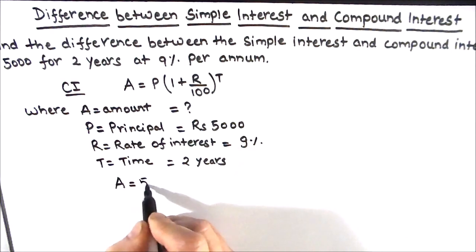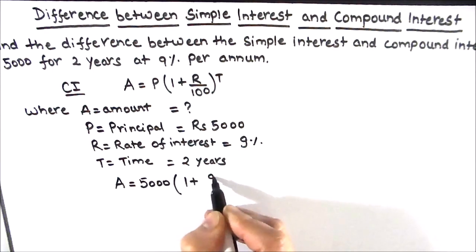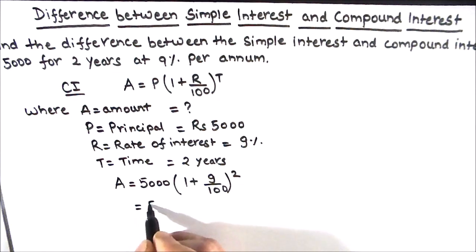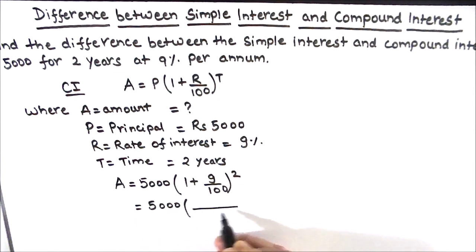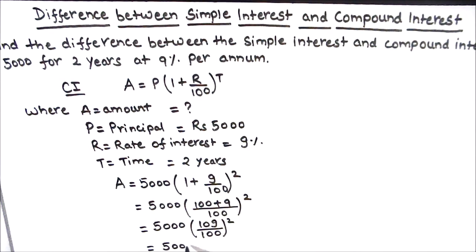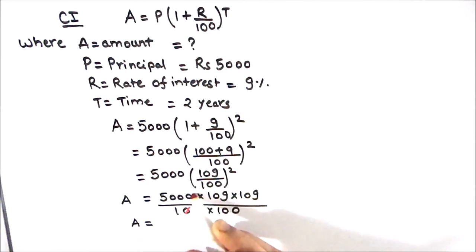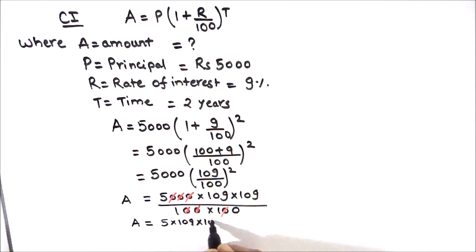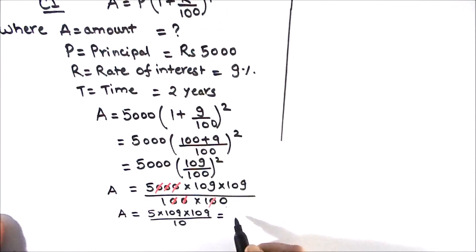Substituting the values in the formula: A = 5000 × (1 + 9/100)², which equals 5000 × (109/100)². That gives 5000 × 109 × 109 divided by 100 × 100. Simplifying, the zeros cancel to give 5 × 109 × 109 divided by 10. So the amount comes out to be rupees 5940.50.